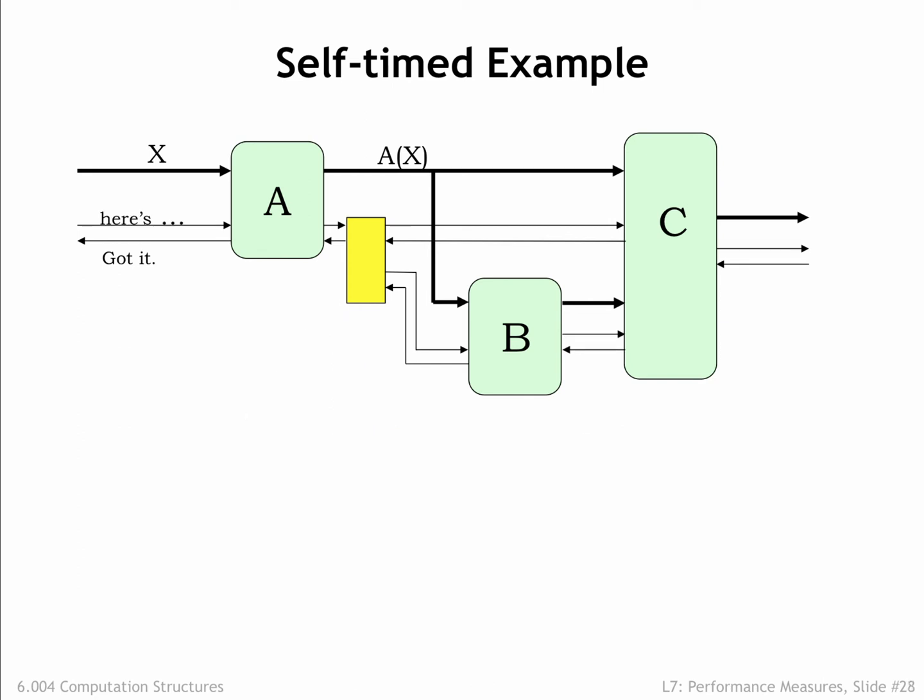Let's watch the system in action. When a signal is asserted, we'll show it in red, otherwise it's shown in black. A new value for the A stage arrives on A's data input, and the module supplying the value then asserts its here's X signal to let A know that it has a new input.